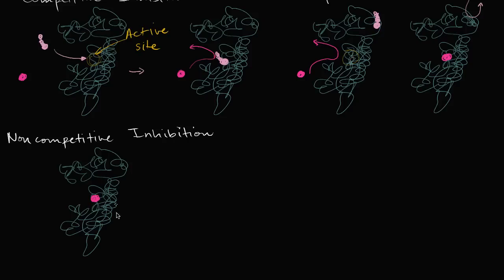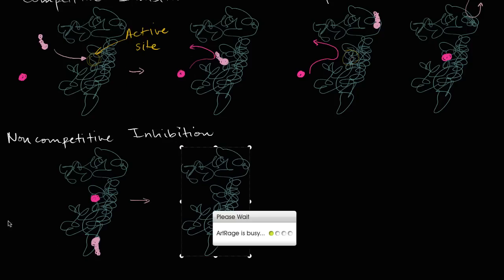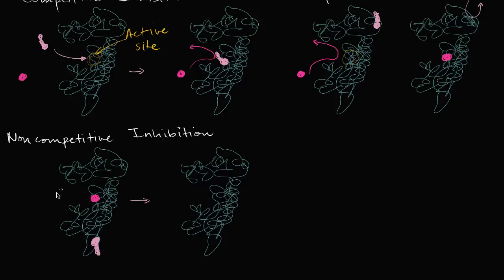The inhibitor can bind at an allosteric site. When they're both bound, notice they're not competing for the enzyme — they can both be on the enzyme. This character can bind to the enzyme whether or not the substrate is there. But if this inhibitor binds, the substrate can still bind. However, now the reaction isn't going to proceed. No reaction is catalyzed — it just prevented anything from happening. The substrate leaves the active site with no reaction, and the inhibitor leaves as well.